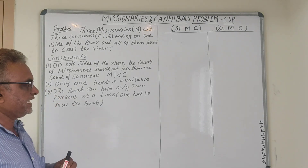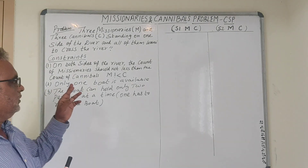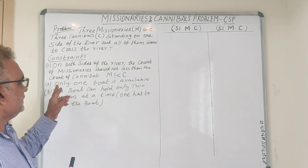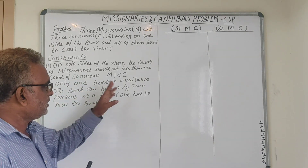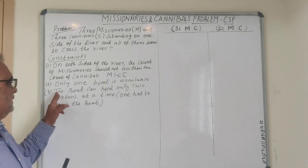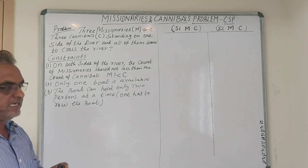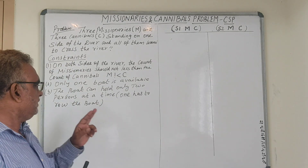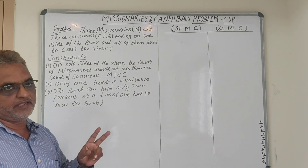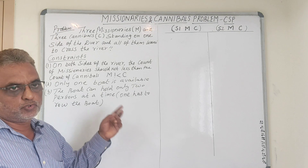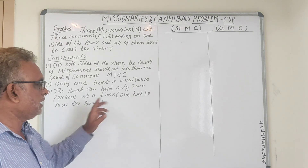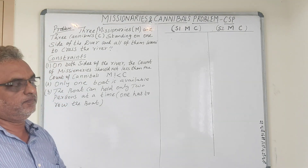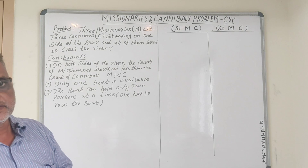The second constraint is that only one boat is available. The third constraint is that the boat can hold only two persons at a time, and among the two, one has to row the boat. These are the constraints.